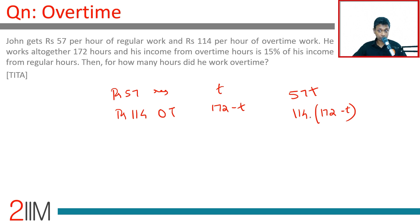Income from overtime hours is 15 percent of regular income. So 15 percent of 57t equals 114 into 172 minus t.